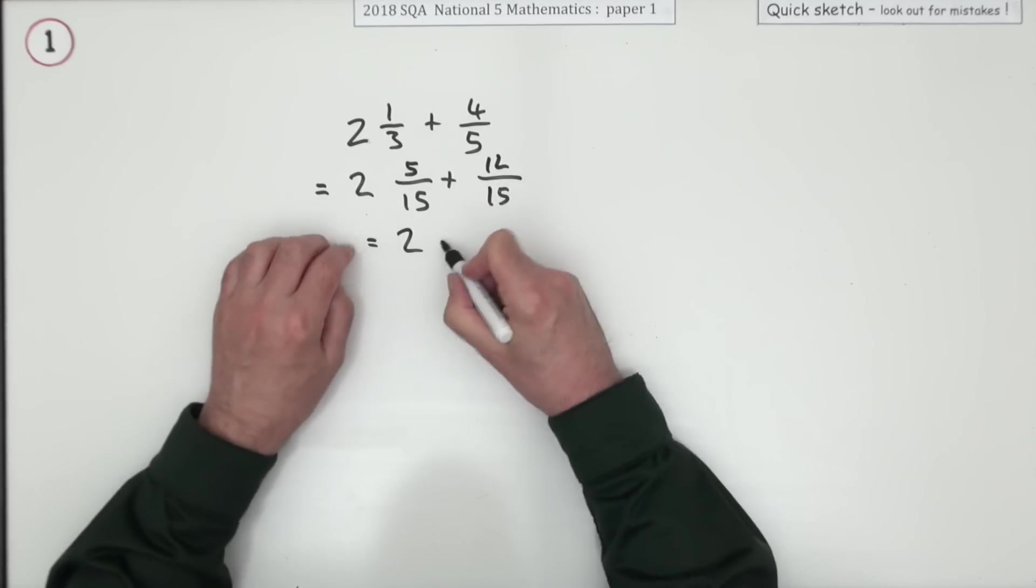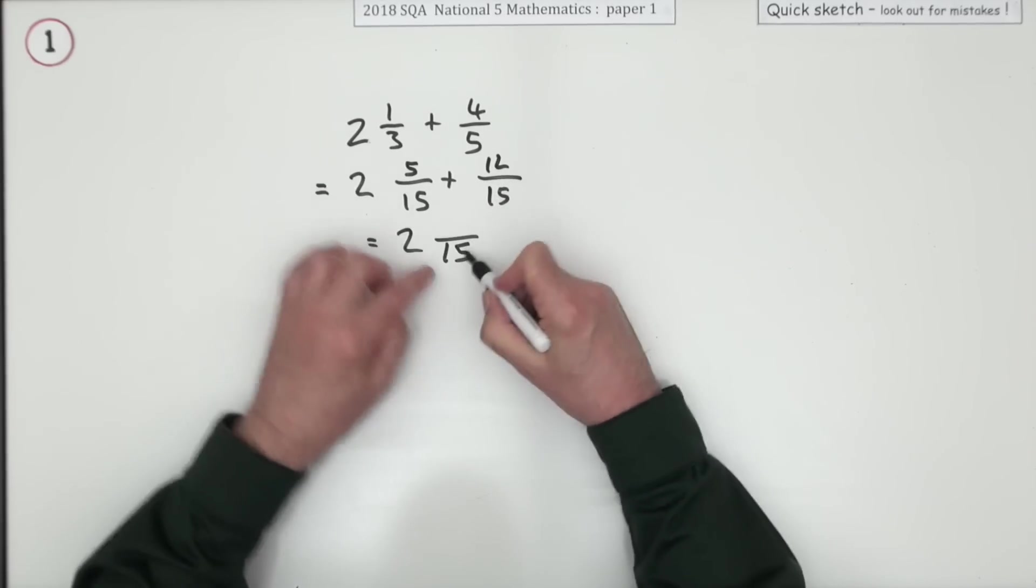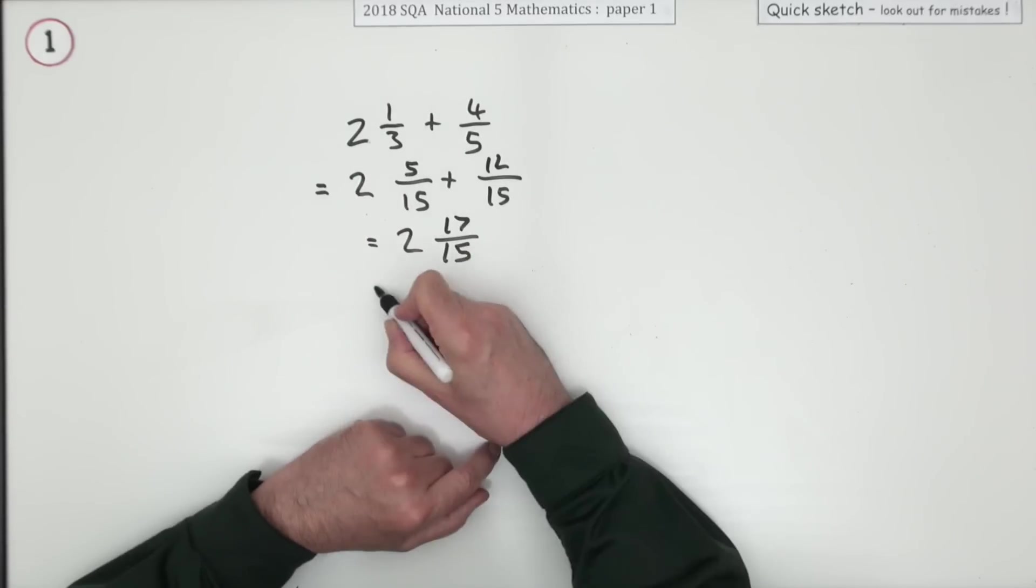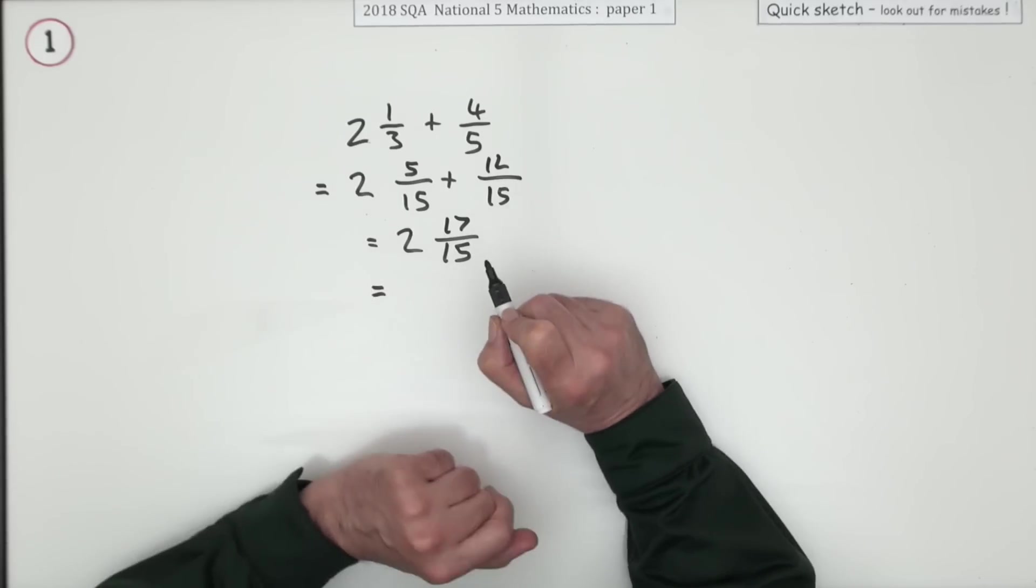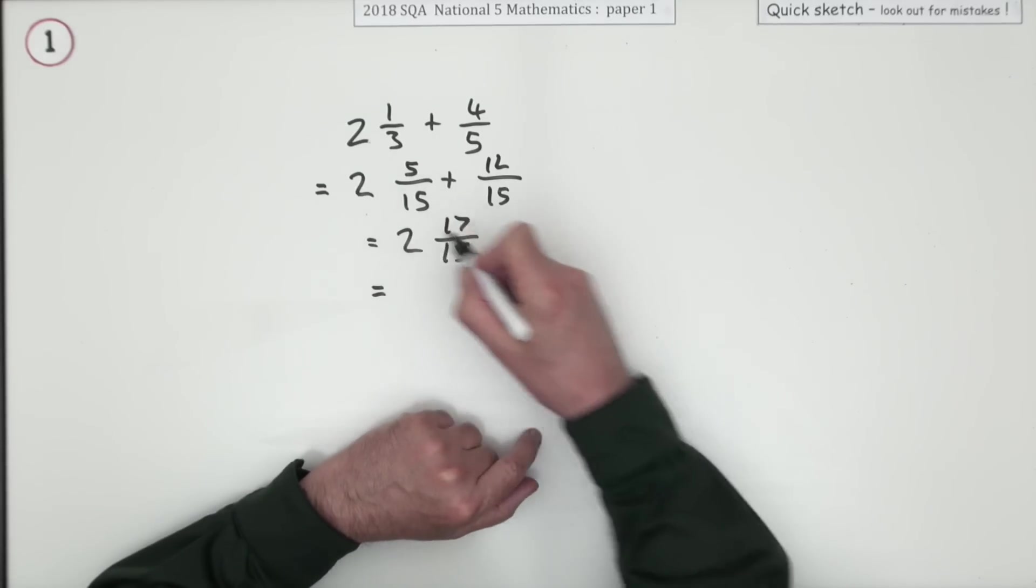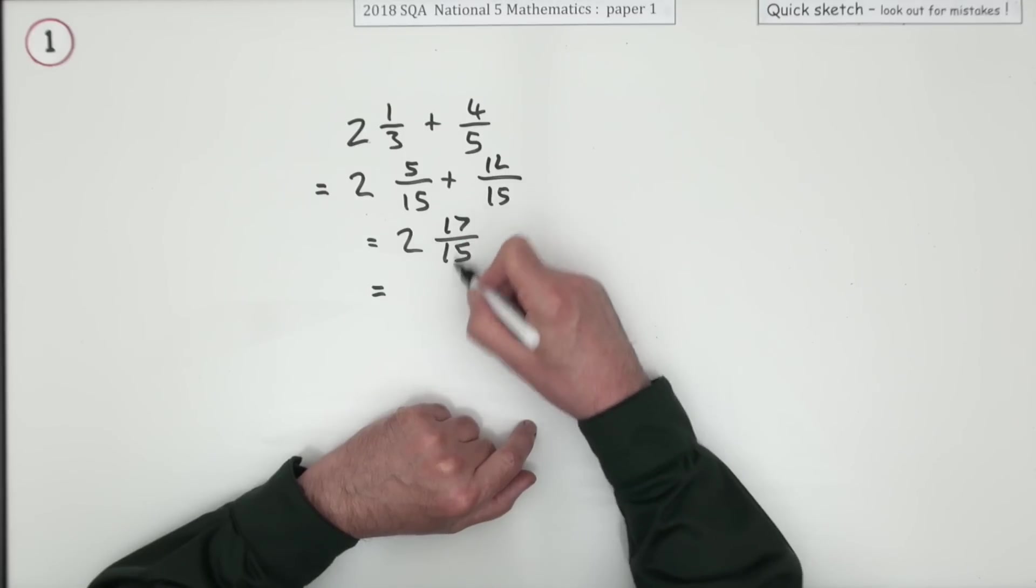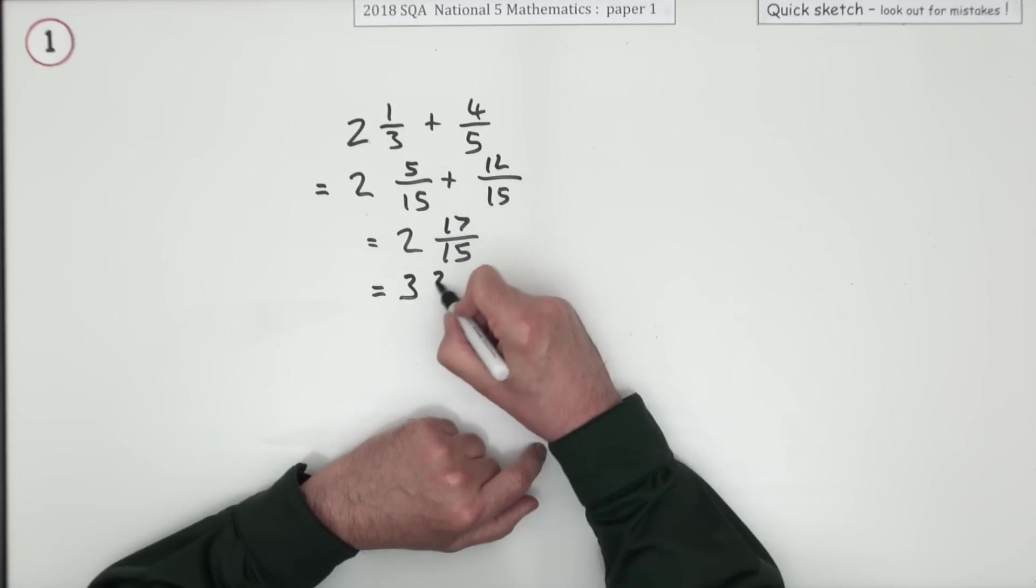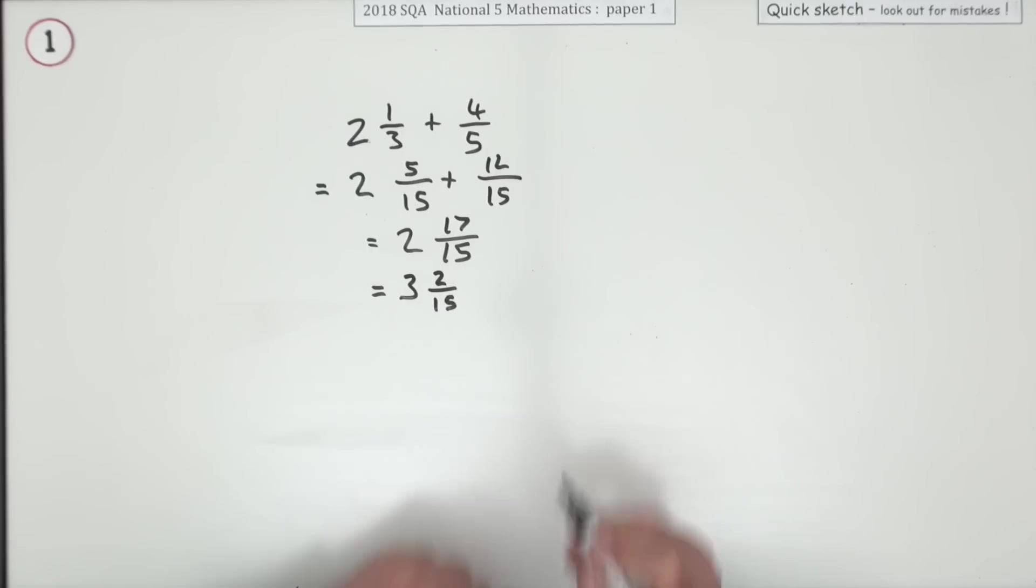So when you add these together, since they're both 15ths, it'll be a single fraction of 15. But 5 and 12 actually make 17. It's top-heavy, improper. So extract a whole number from that, taking 15 of those parts, adds 1 to the whole number, leaving just 2 parts behind. So 3 and 2 fifteenths.